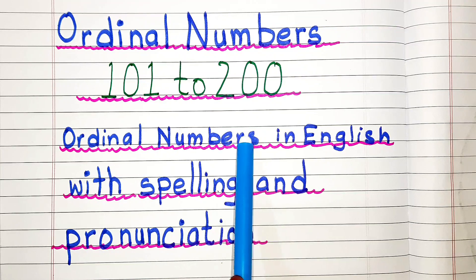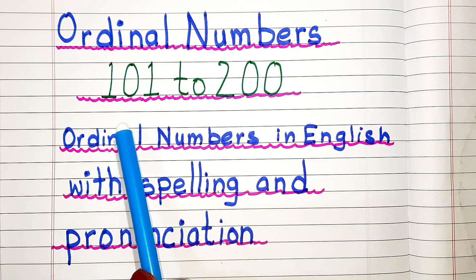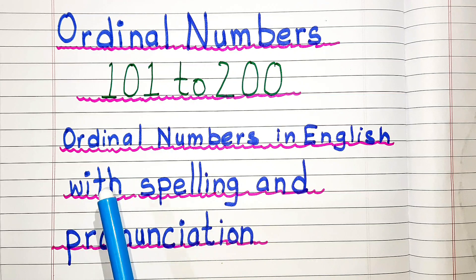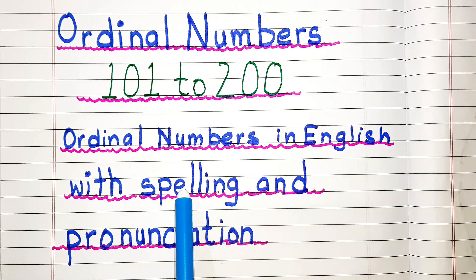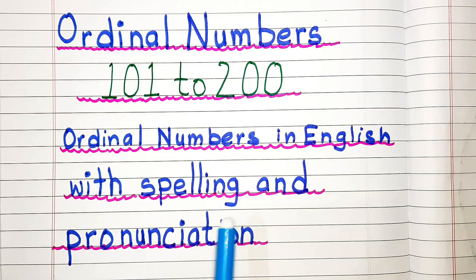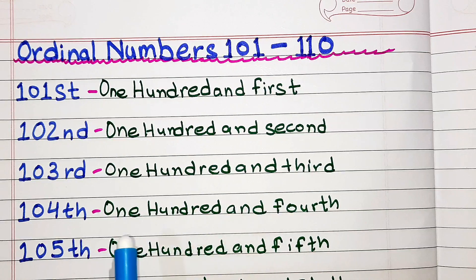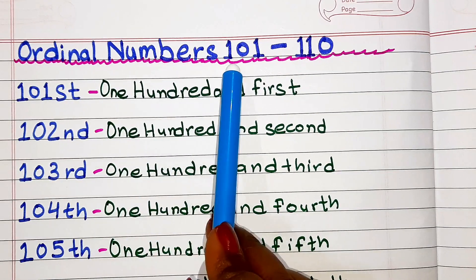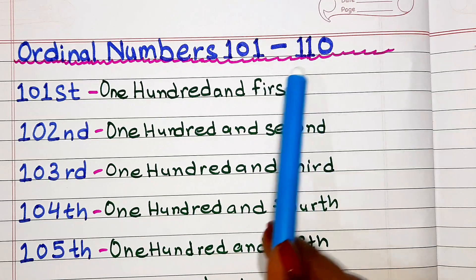Hello everyone, welcome to channel Simple Easy Learning. Today's video topic is ordinal numbers. In this video we will learn ordinal numbers from 101 to 200, with spelling and pronunciation. For spelling you can pause the video and write the spelling. Now let's begin with ordinal numbers from 101 to 110.